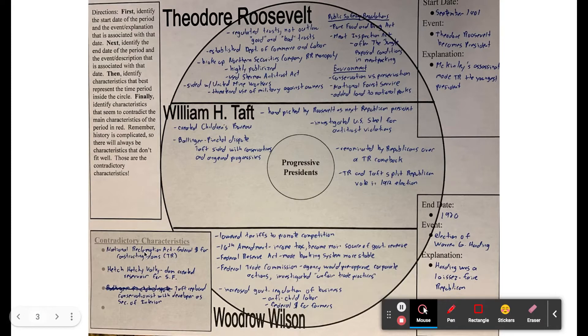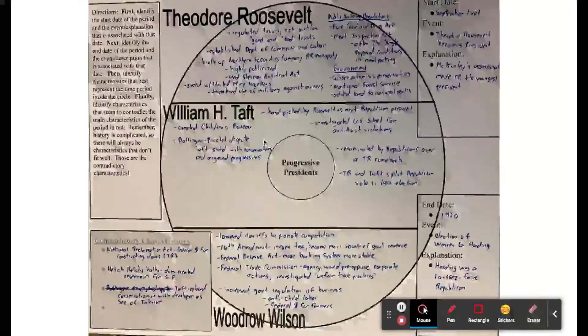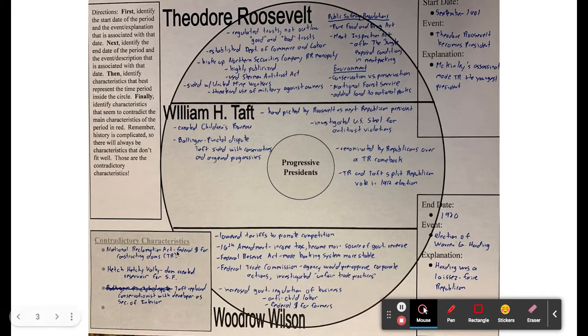A couple of contradictory characteristics. These are progressives that are about more government regulation. The contradictory characteristics would be ones where businesses were allowed to do the things that they wanted to do, like the National Reclamation Act. This is constructing dams and stuff in areas that were environmentally sensitive. So businesses still had access to resources like that.